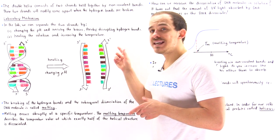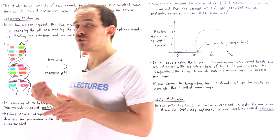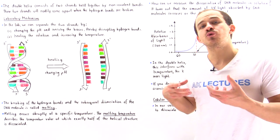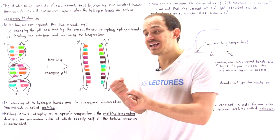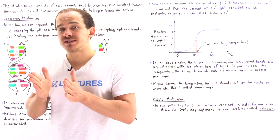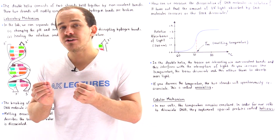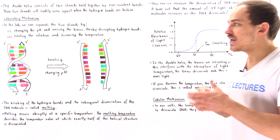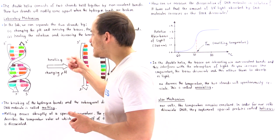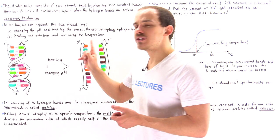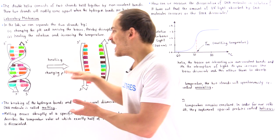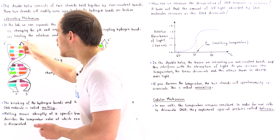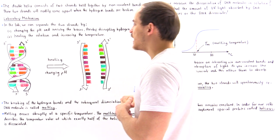We can also heat our solution. By heating the solution, we're essentially bringing energy in, increasing the energy of the bases, which will disrupt the hydrogen bonds and break apart that double helix structure. So in a lab, we can either increase the temperature or change the pH, and either one will break the hydrogen bonds holding our two strands of DNA together.